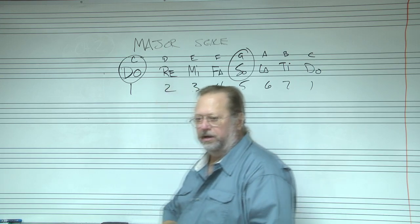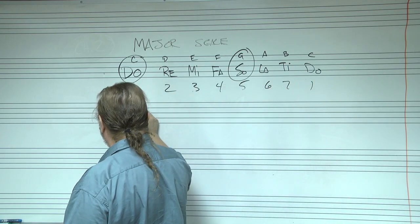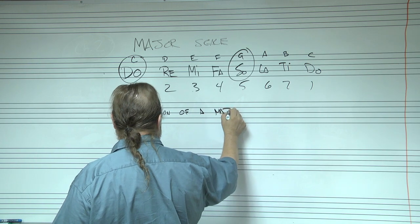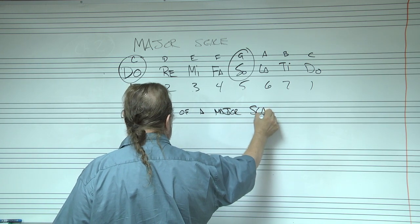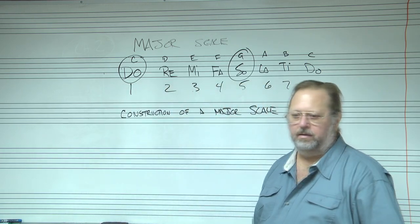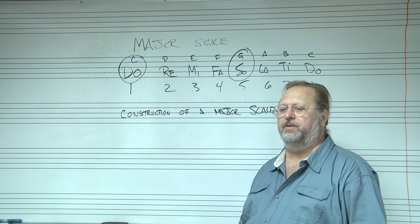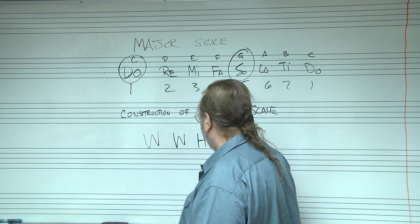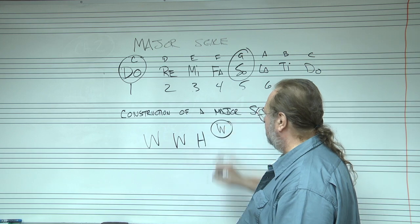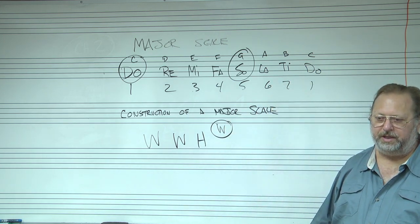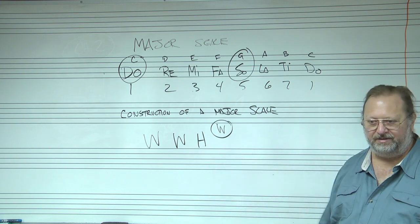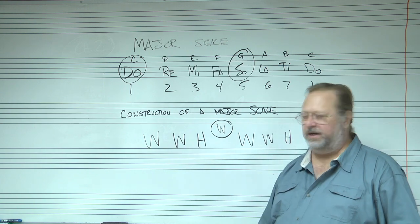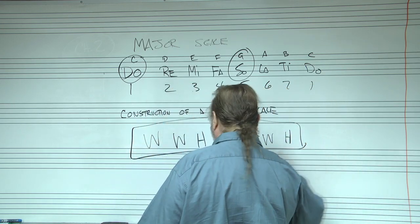So what's the construction of a major scale and how do you use it? The formula is: whole step, whole step, half step — whole step, whole step, whole step, half step. As a friend in Baton Rouge likes to say, it's a whole-step tied to the next one. That's the formula for a major scale.